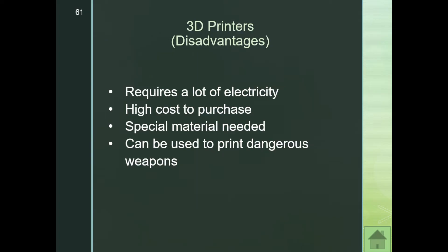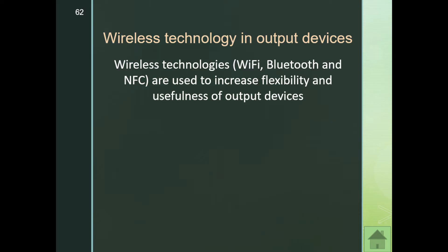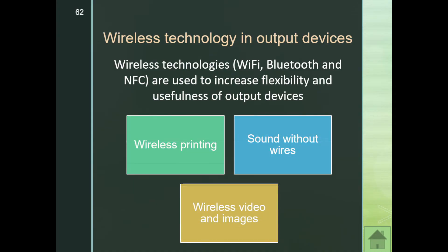Disadvantages of 3D printers include: they require a lot of electricity, have a high purchase cost, require special materials like filament, and unfortunately can be used to print dangerous weapons. We also have wireless technology in output devices — Wi-Fi, Bluetooth, and NFC — used to increase flexibility and usefulness, enabling wireless printing, wireless video, and sound without wires, such as wireless headphones and Wi-Fi printing.